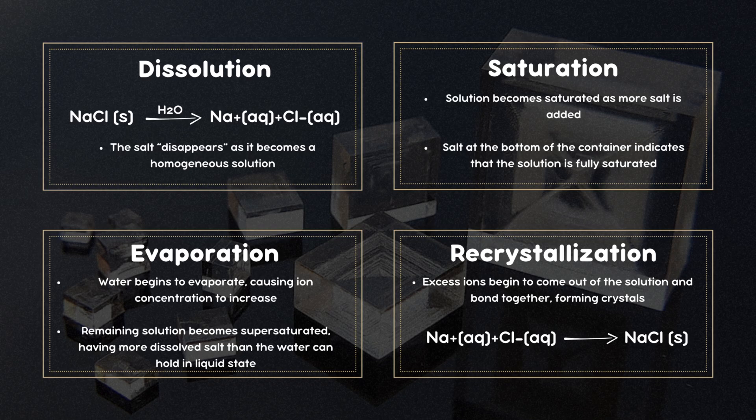Lastly, we have recrystallization. In a supersaturated solution, the excess sodium and chloride ions begin to come out of the solution and bond together to form solid crystals. These ions arrange themselves into a highly ordered, repeating lattice structure. This arrangement minimizes energy and creates the characteristic cubic shape of sodium chloride crystals.